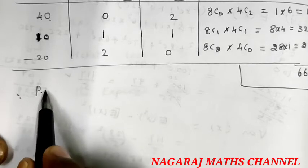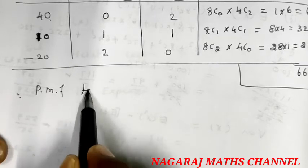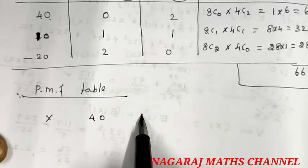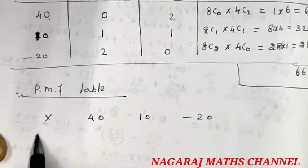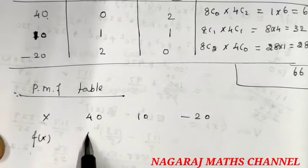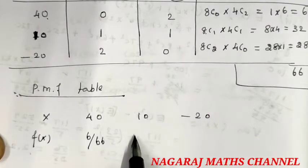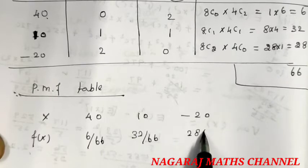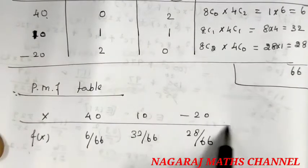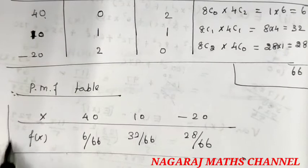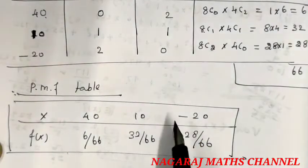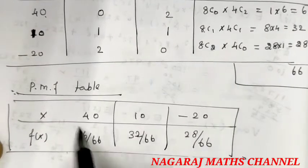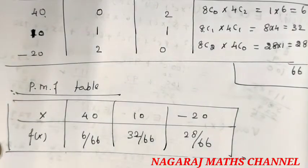We can write the probability mass function table. X takes values 40, 10, minus 20. The corresponding f(x) values are 6 divided by 66, 32 divided by 66, and 28 divided by 66. If you add all of them, they sum to 1.